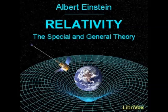Apart from this one, it has hitherto been possible to make only two deductions from the theory which admit of being tested by observation. To wit, the curvature of light rays by the gravitational field of the sun, first observed by Eddington and others in 1919, and a displacement of the spectral lines of light reaching us from large stars, as compared with the corresponding lines for light produced in an analogous manner terrestrially, i.e. by the same kind of atom, established by Adams in 1924. These two deductions from the theory have both been confirmed.